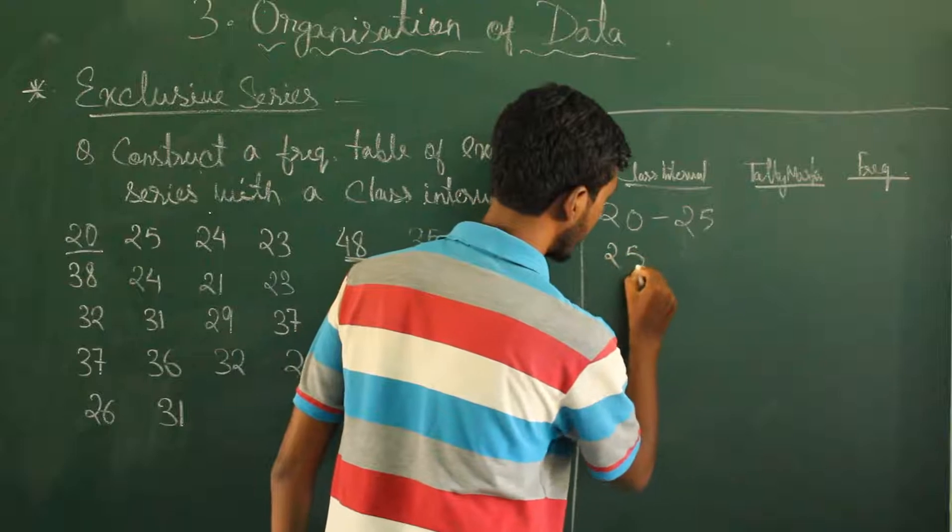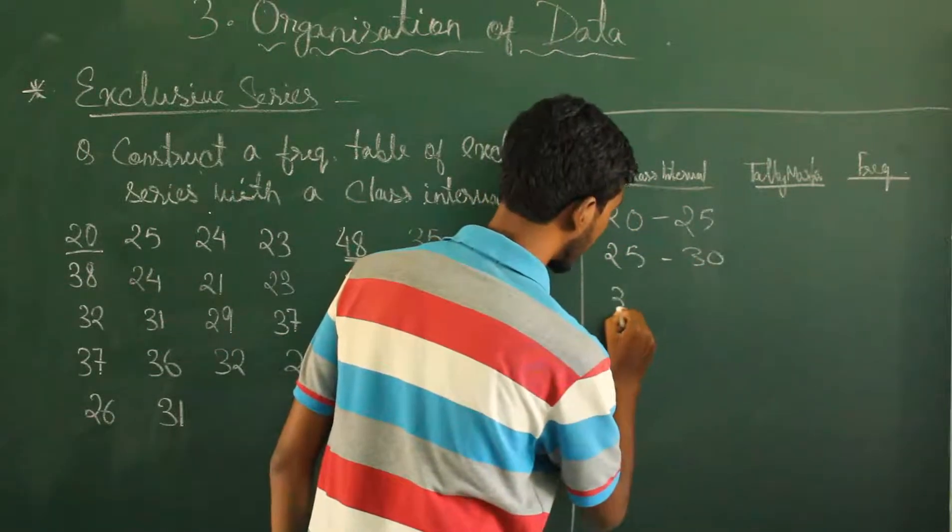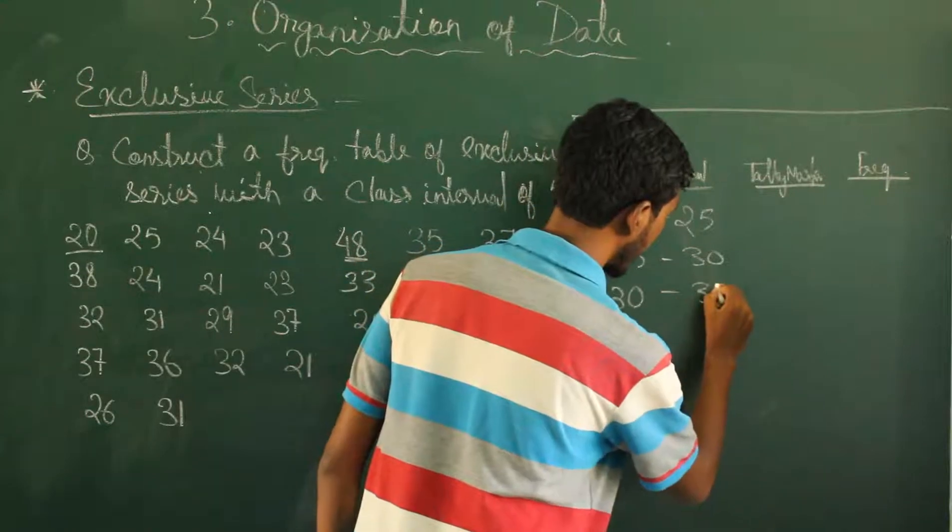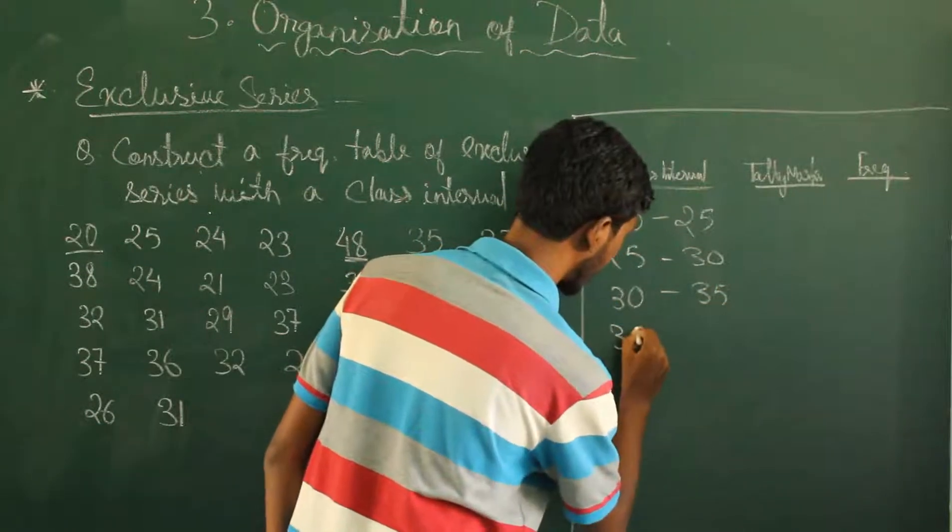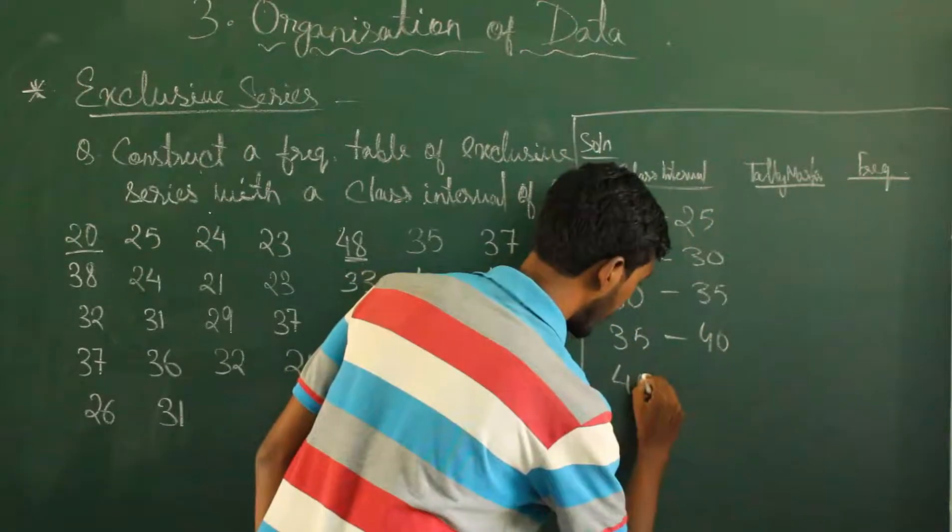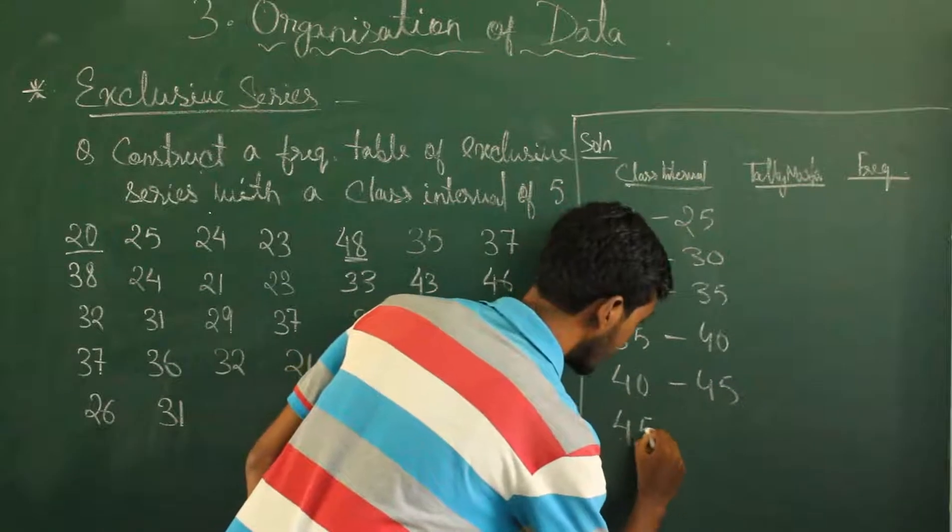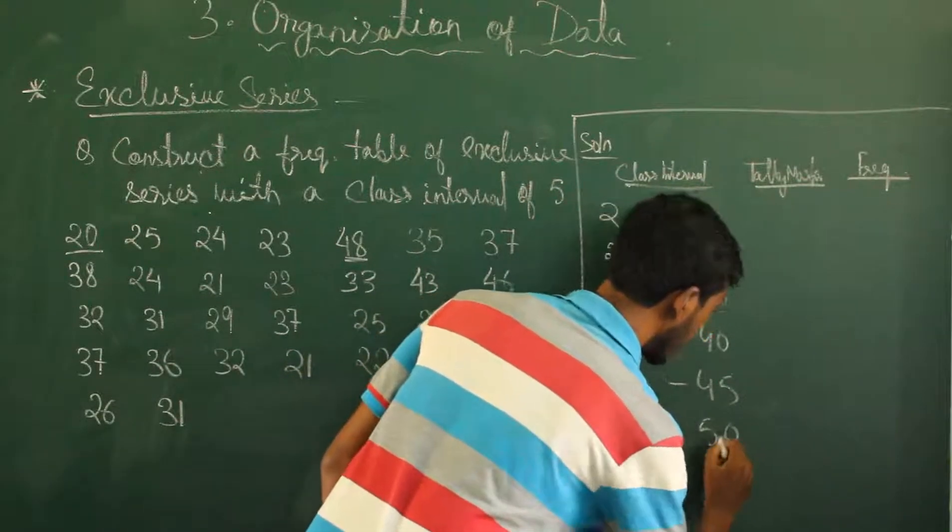The class interval is 5, so what do we do? We start from 20 to 25, then 25 to 30, 32, 35, 35 to 40, 42, 45, and 45 to 50.